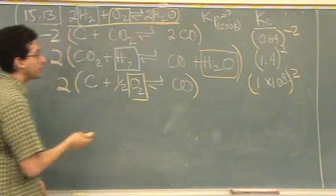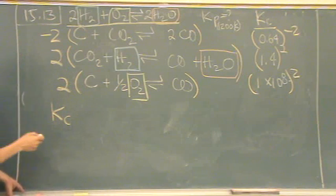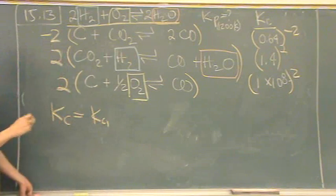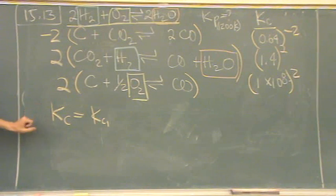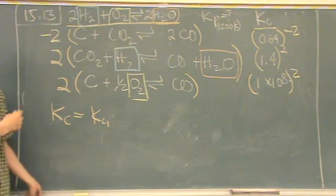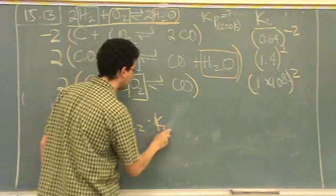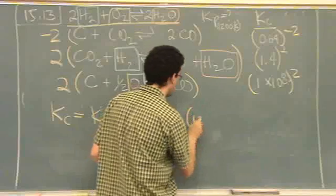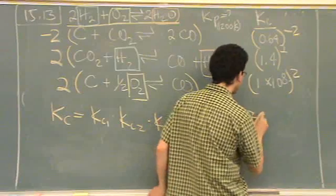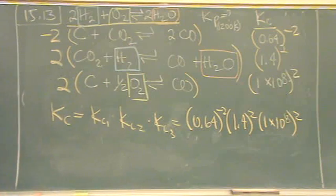And then we want to get our total K for this reaction. So Kc overall, K total is going to equal the Kc of one. What do I do to get the total K? I don't add them. Multiply all of them. I have to multiply. So K's are multiplicative. Times Kc two, times Kc three. So that's just going to equal 0.64 to the minus two, times 1.4 to the two, times 1 times 10 to the eighth to the two. That's going to be Kc total.